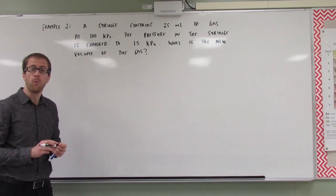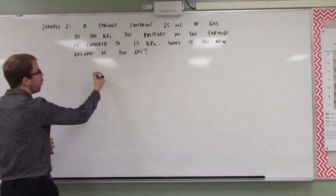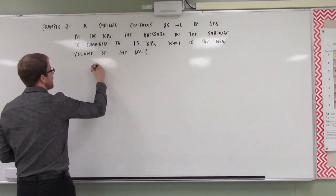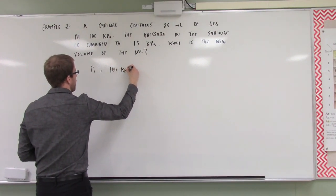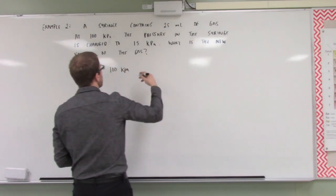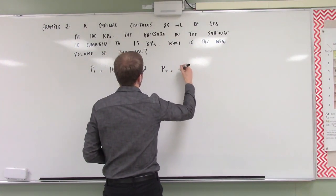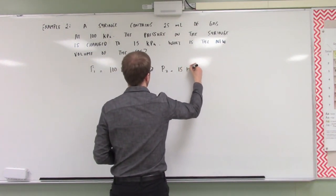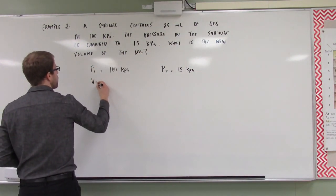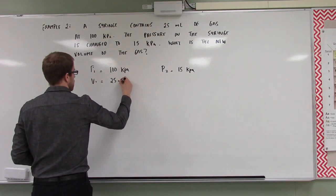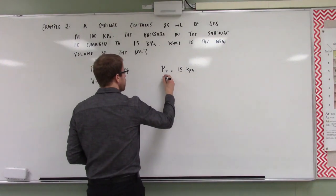So what is step one? Step one is we need to predict. We know that our initial pressure was 100 kilopascals and our final pressure was 15 kilopascals. We know that our initial volume is 25 milliliters. And what are we looking for? We're looking for our new volume — what is the change in our volume as a result of the change in our pressure?